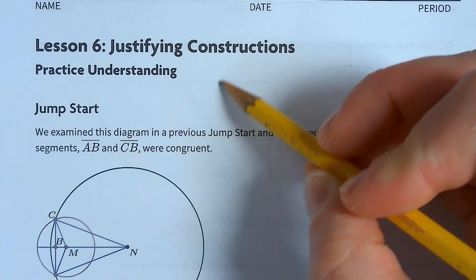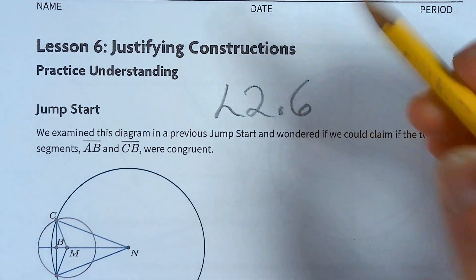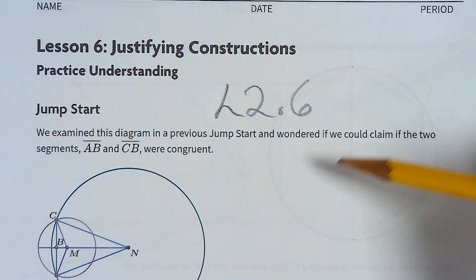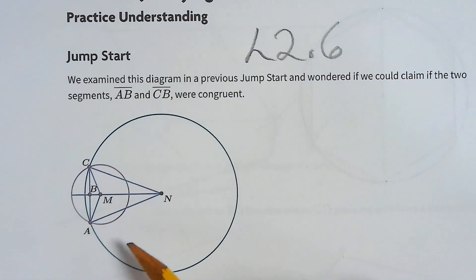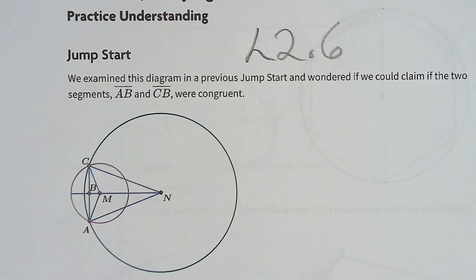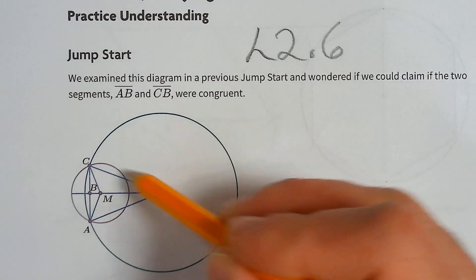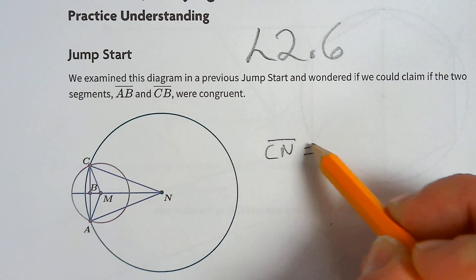Hello and welcome back to lesson 2.6. We're actually going back to where we started in lesson 2.1 because you remember this thing we looked at. We talked about basically radiuses and how they're the same, and we could say things like segment CN is congruent to segment AN.